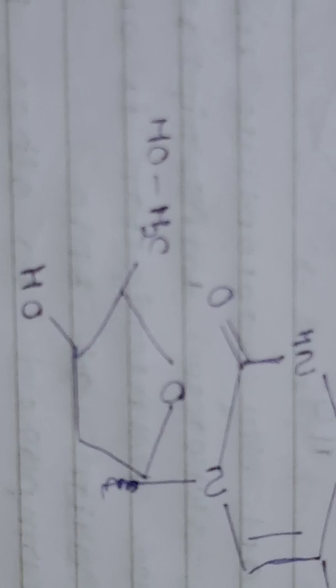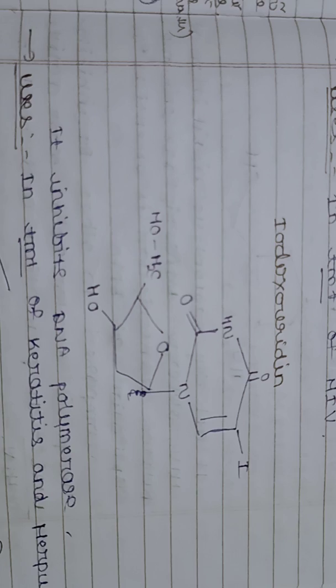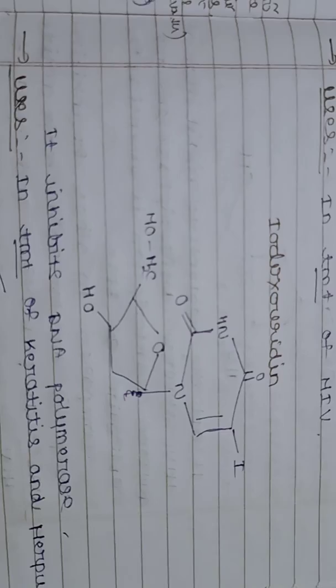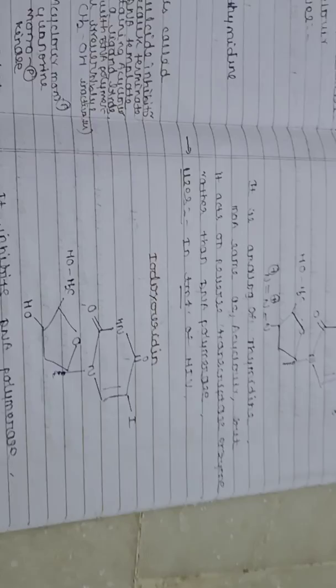Idoxuridine is another example of a pyrimidine nucleoside and nucleotide. The main difference between idoxuridine and zidovudine is that the methyl group present in zidovudine is replaced by iodine, and the three nitrogen groups at the end of zidovudine are replaced by a hydroxy (OH) group. Idoxuridine inhibits the DNA polymerase enzyme, similar to acyclovir, and is used in the treatment of keratitis and herpes.